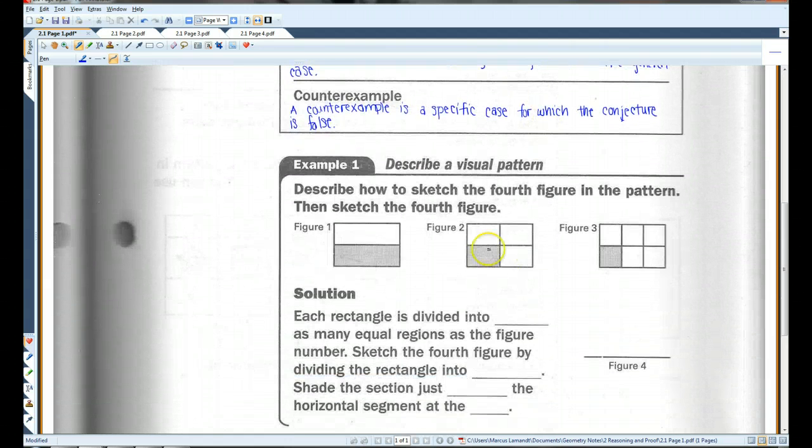For example, describe how to sketch the fourth figure in the pattern, then sketch the fourth figure. So, figure one, it looks like it's divided in half. Figure two, it's divided into four. Figure three, it's divided further.